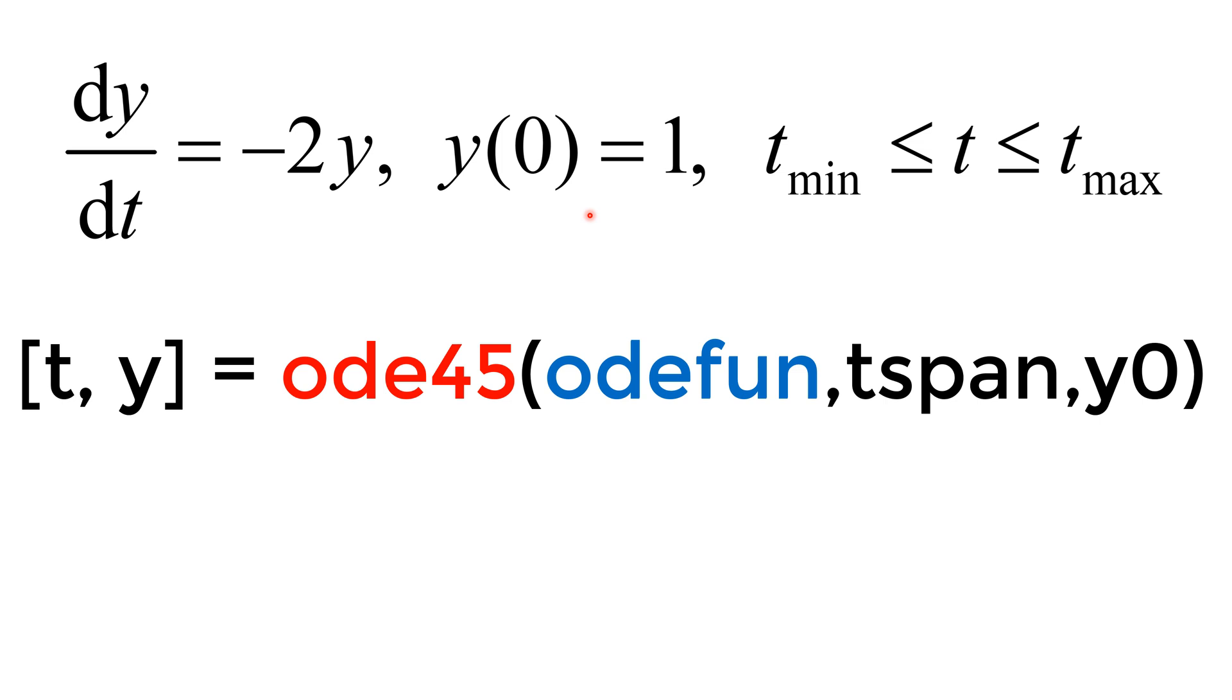Next, we need to define the range of the independent variable t. I use the tspan as a variable name for 1 by 2 row vector. And the first element should be the lower bound, and the second element should be the upper bound. Lastly, you need to define the initial condition y0. In this case,